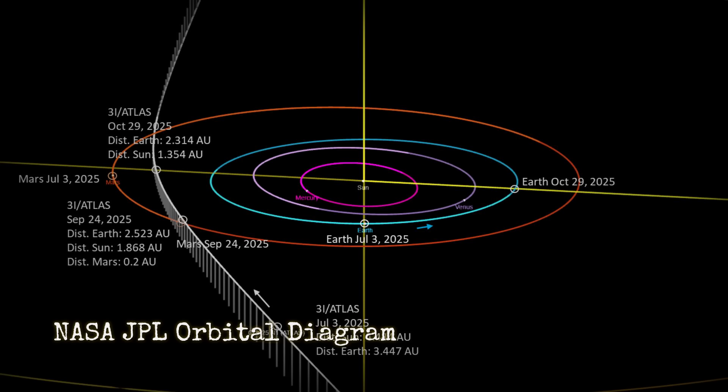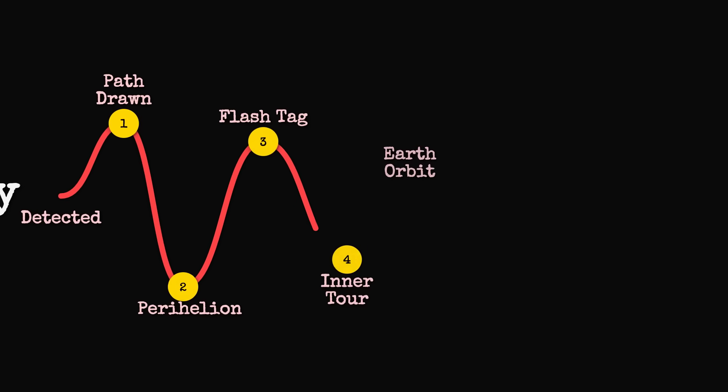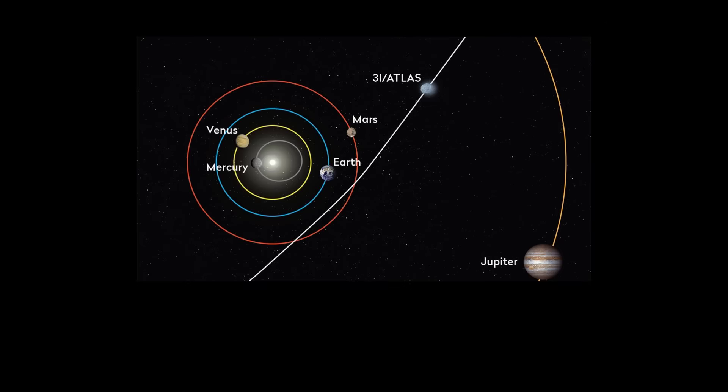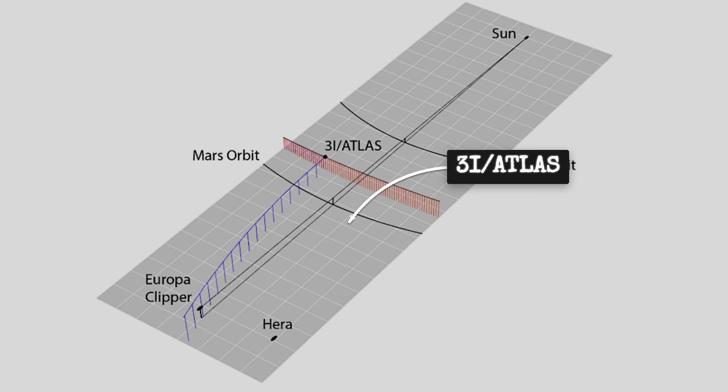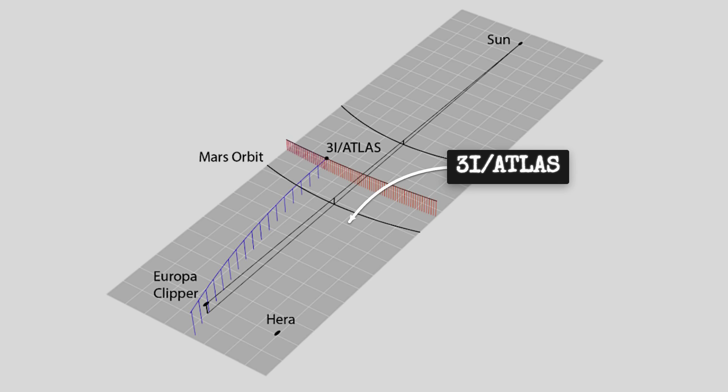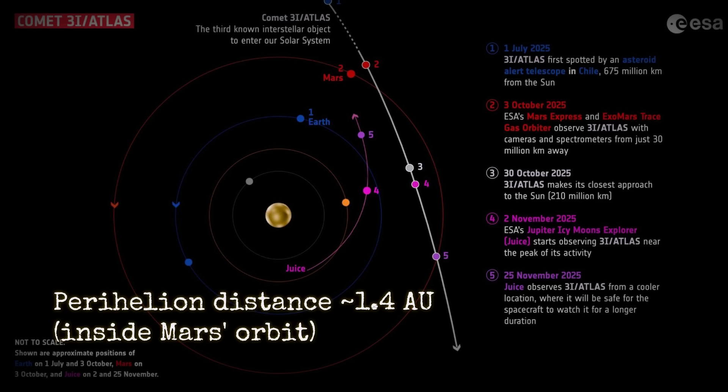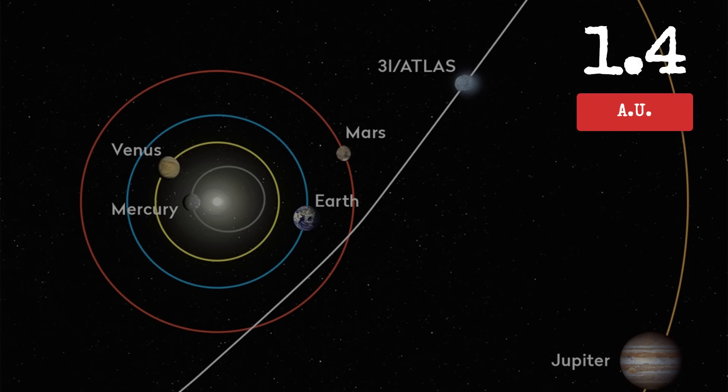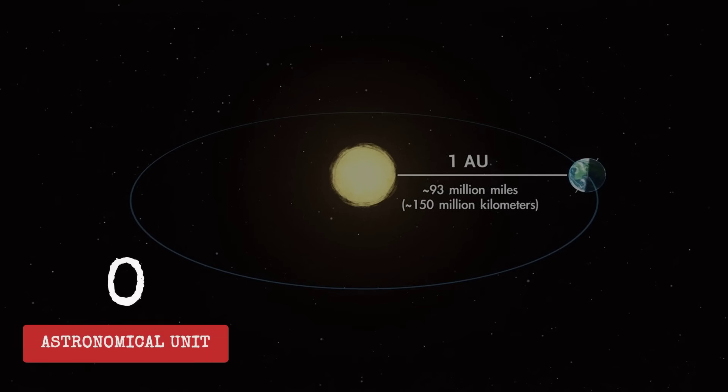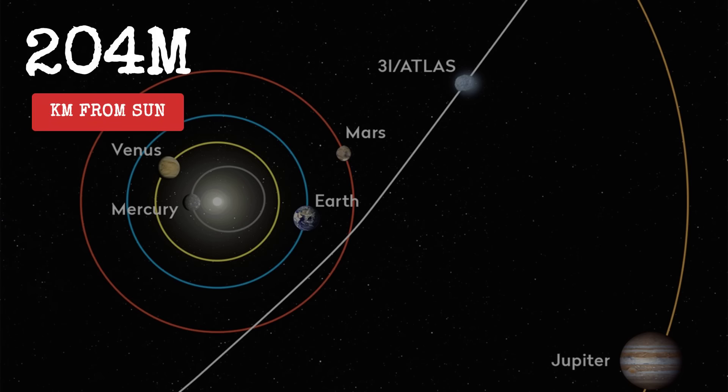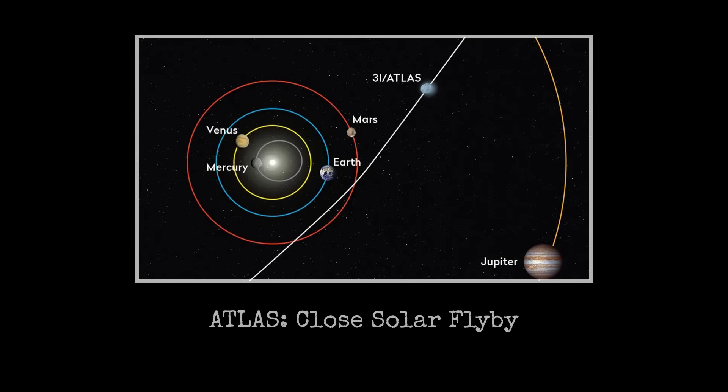Here we have the orbital diagram from NASA's JPL showing 3I/Atlas's path through the inner solar system. We see Earth's orbit in blue, Mars in red, and the trajectory of 3I/Atlas cutting through at that shallow 5-degree inclination. You'll notice how it crosses Mars' orbit and continues inward towards the sun. The perihelion distance has been calculated at approximately 1.36 to 1.4 astronomical units. To put that in perspective, one astronomical unit is the distance from Earth to the sun, about 150 million kilometers. So, 3I/Atlas will pass at roughly 204 million kilometers from the sun, placing it between Earth's orbit and Mars' orbit at its closest approach.